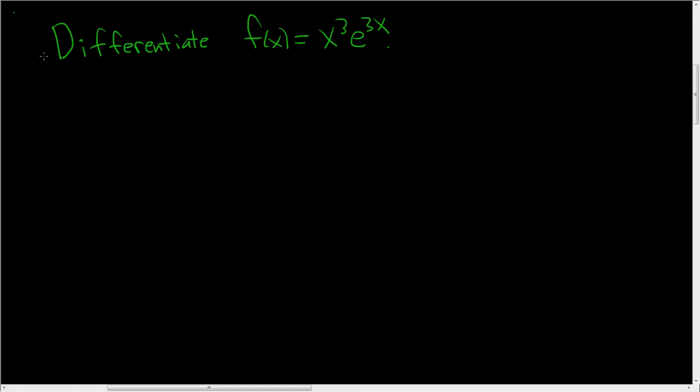Differentiate f(x) = x³e^(3x). So we have a product of two functions, x³ and e^(3x), so we have to use the product rule solution.